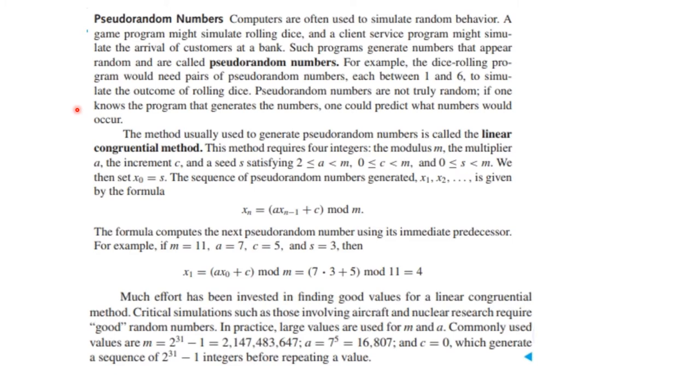Another computer science function is to generate pseudo-random numbers. These aren't really random numbers because there's a formula that generates them, but they look like random numbers. They're not truly random, and if you know the formula, you could figure out what the numbers were. The method usually used to generate these is called the linear congruence method. You will generate the next number in the sequence of random numbers by multiplying a times x_{n-1}, the previous number, plus c, and you're going to do this with the mod function mod m.